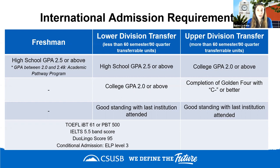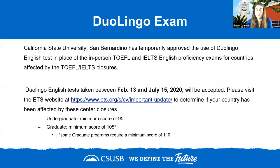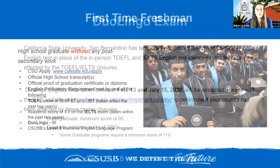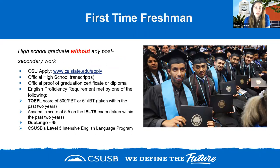For first-time freshmen, we require a TOEFL, IELTS, or Duolingo score. The Duolingo option was implemented for fall 2020 and we are looking at extending it through spring 2021, given testing uncertainties worldwide. We also offer conditional admission through our English language program, which requires completion through level three. The minimum Duolingo score for undergraduates is 95. We do not require SAT, ACT, essays, or letters of recommendation — just an application, high school transcripts, and English proficiency.